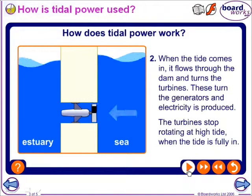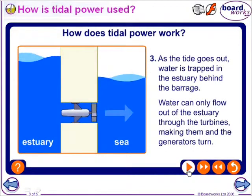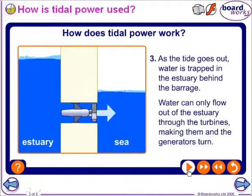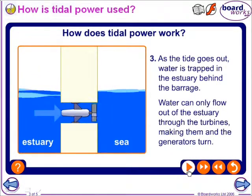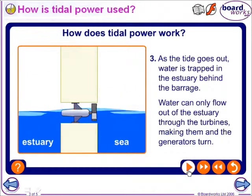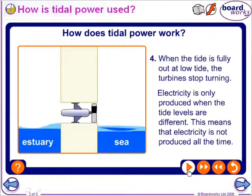The turbines stop rotating at high tide when the tide is fully in. As the tide goes out, water is trapped in the estuary behind the barrage. Water can only flow out of the estuary through the turbines, making them and the generators turn. When the tide is fully out at low tide, the turbines stop turning. Electricity is only produced when the tide levels are different, which means that electricity is not produced all of the time.